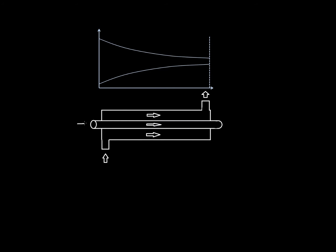This is the hot water and this is the cold — it doesn't have to be water, it can be anything. We're going to assume that the mass flow rates for the cold and hot water are the same, and the heat capacities are the same. This point represents the cold water in, this point represents the hot water in, this point represents the temperature of the cold water out, and this point represents the temperature of the hot water out.